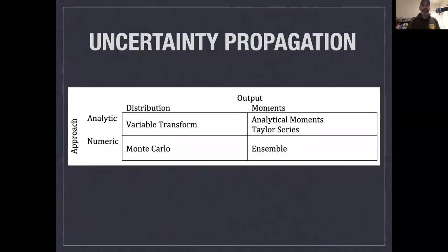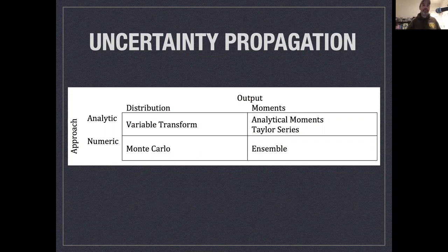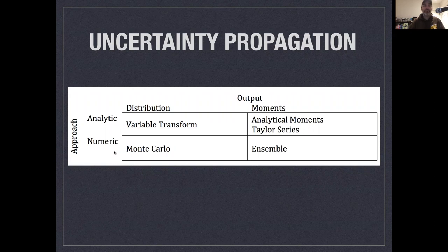Welcome back to this series of lectures on uncertainty propagation. We're asking how the uncertainty in the inputs of our models — such as the parameters, covariates, and drivers — translates into uncertainty in our predictions. Essentially, how do we put confidence intervals and predictive intervals around models? In the last series of videos, we talked about analytical approaches involving exact or approximate mathematical solutions. Here we're going to talk about numerical approaches to uncertainty propagation.